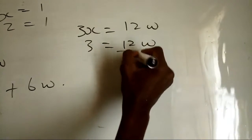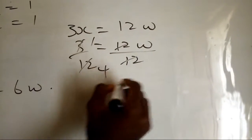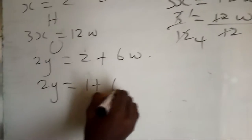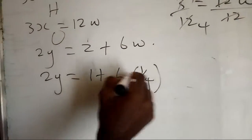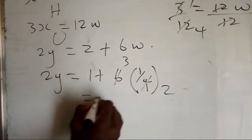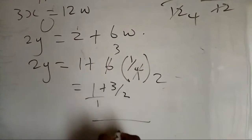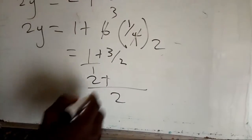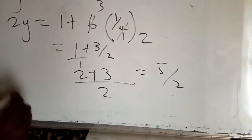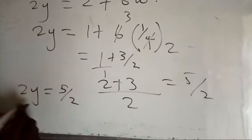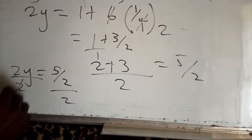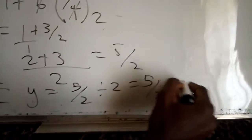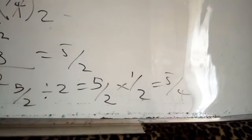With x equal to one: 3 equals 12w, divide both sides by 12, so w equals one over four. For oxygen: 2y equals z plus 6w, which is 1 plus 6 times 1/4, giving 1 plus 3/2. Finding the LCM: 2/2 plus 3/2 equals 5/2. So 2y equals 5/2, and y equals 5/4.